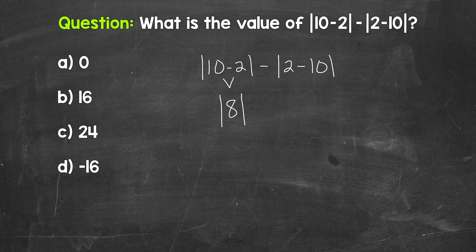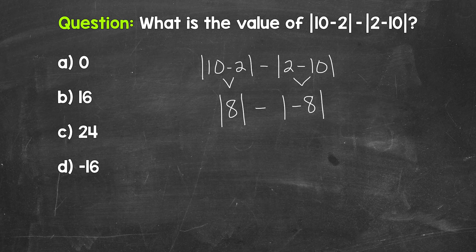So this simplifies to the absolute value of 8, and then minus — now we need to do 2 minus 10. 2 minus 10 gives us negative 8. So this simplifies to the absolute value of negative 8. Now that we've simplified everything inside the absolute value symbols, we need to take the absolute values: the absolute value of 8 minus the absolute value of negative 8.